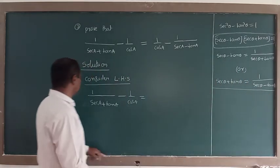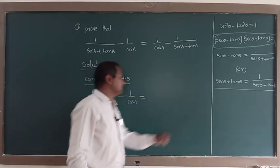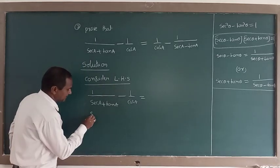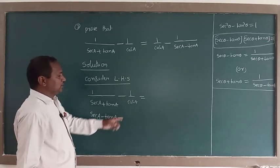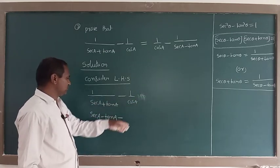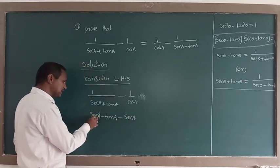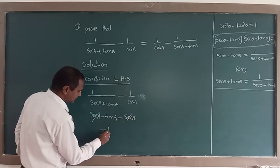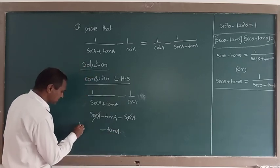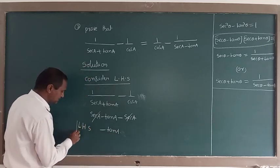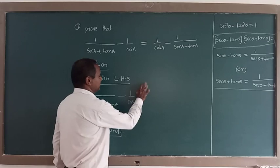Applying the formula: 1 by secant A plus tan A can be written as secant A minus tan A. Then minus 1 by cos A — the reciprocal of cos is secant — so the two secant A terms cancel, and the left-hand side part equals negative tan A.